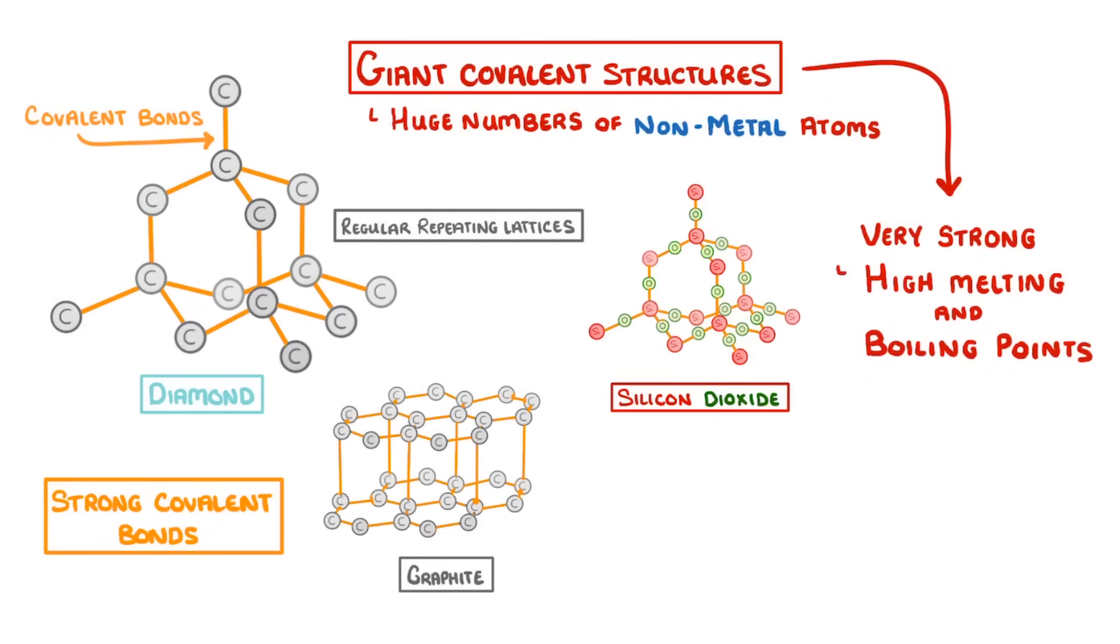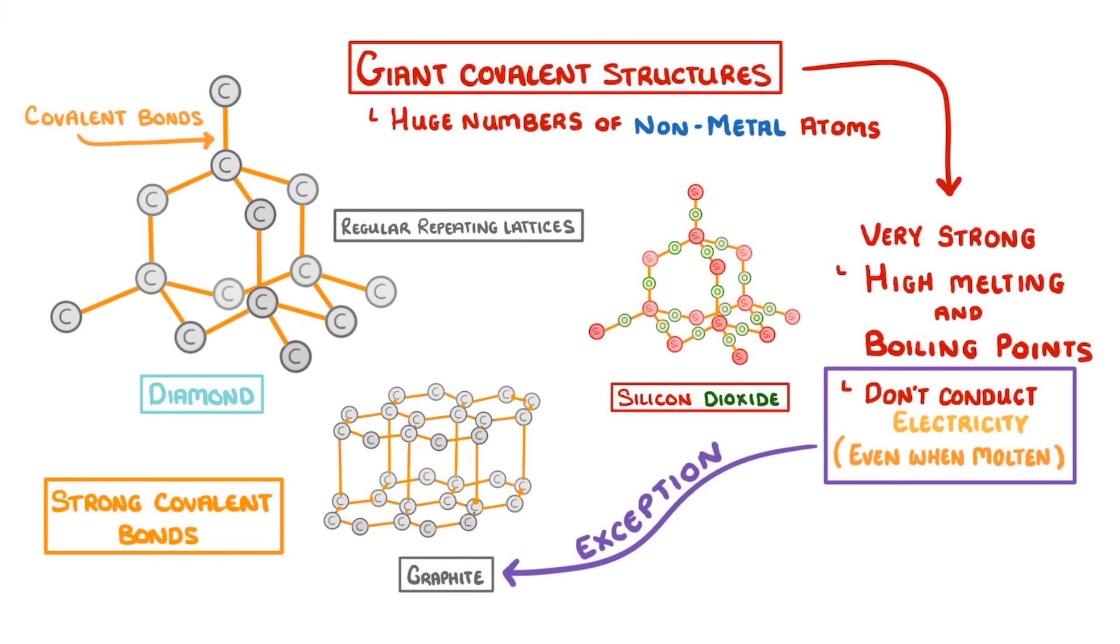The other property to know is that they generally don't conduct electricity, because they don't contain any charged particles, even when they're molten. An exception to this though is graphite, which we'll take a closer look at in another video along with diamond, which are both made of carbon atoms.